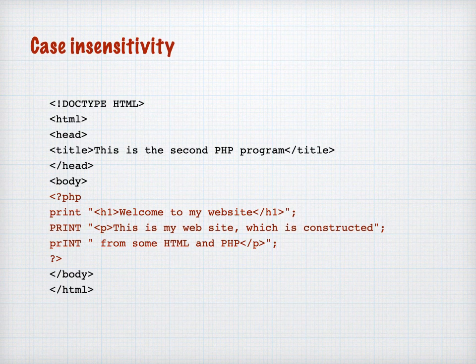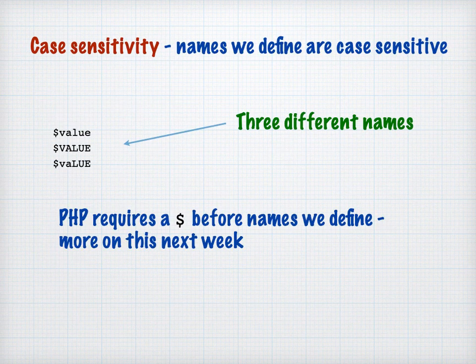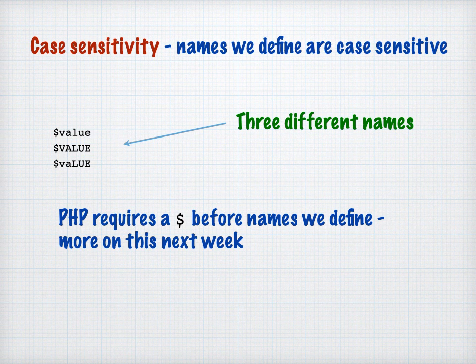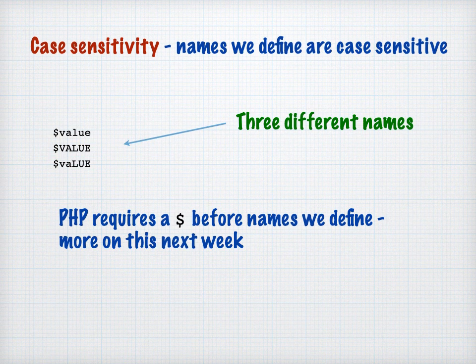Names that we define are case sensitive, so words that we make up — you have to be consistent. In these instances these would be three different names: 'value' in lowercase would be different to 'value' in uppercase. That's really the difference between built-in words in PHP and words that we make up, and we'll talk a bit more about names that we define at a later point.